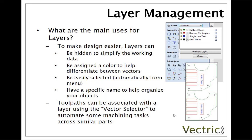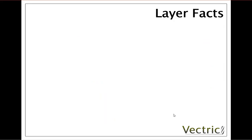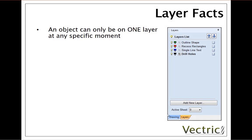Now let's take a look at some facts regarding layers. Firstly, an object can only be on one layer at any specific moment. It cannot be shared between two different layers.